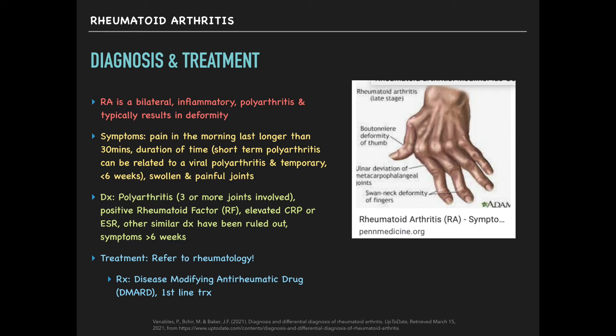For a diagnosis of RA, we're looking for polyarthritis with three or more joints involved, a positive rheumatoid factor, and an elevated CRP or ESR to show the inflammatory process. Other diagnoses must be ruled out and symptoms must have been occurring for longer than six weeks. For treatment, in primary care our job is to identify it and then refer to rheumatology, where they use what's called a DMARD — disease-modifying anti-rheumatic drug. That's really out of our wheelhouse unless you do rheumatology, but we want to identify what's going on and get them where they need to be.